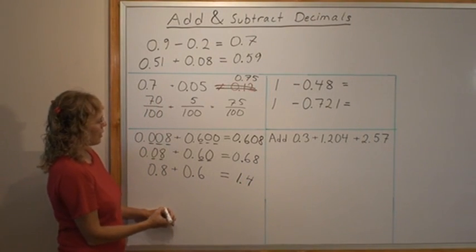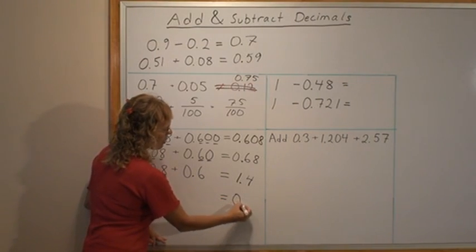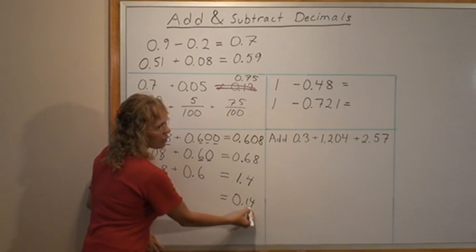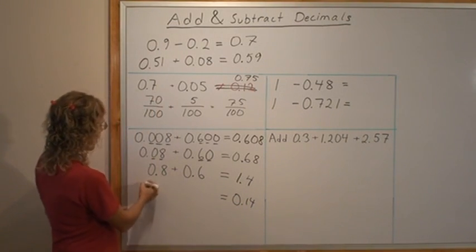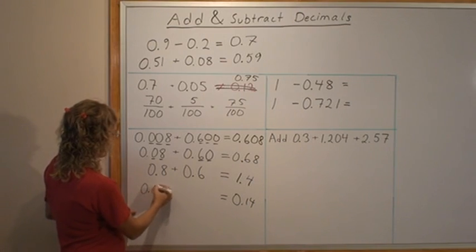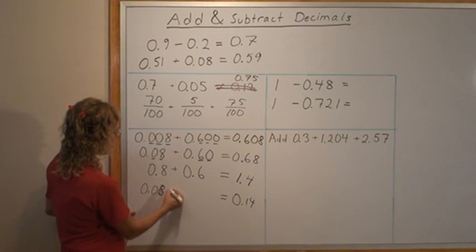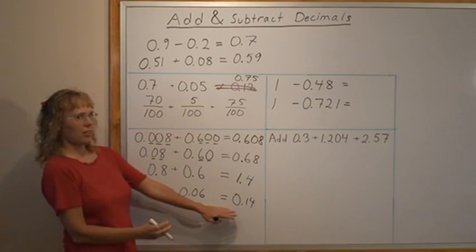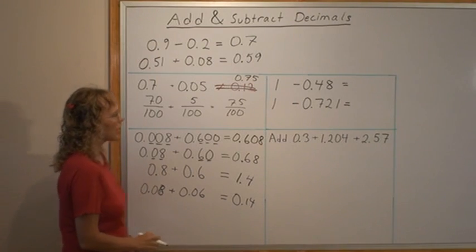Now you could ask, what kind of problem would have an answer 0.14? This would be 14 hundredths. So yes there is, it is 6 hundredths, oh I'm sorry, 8 hundredths and 6 hundredths. This one now has the answer of 0.14. Let's go on here.